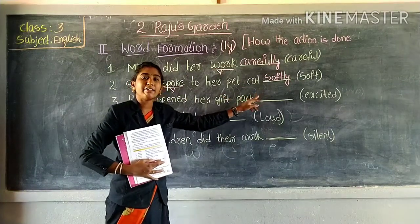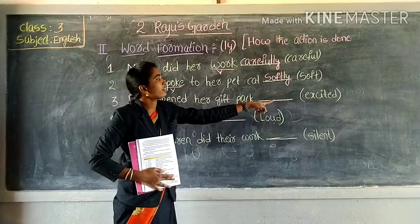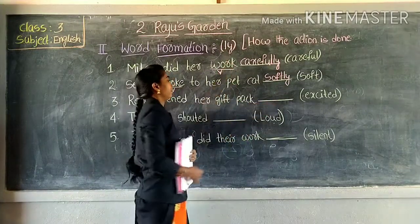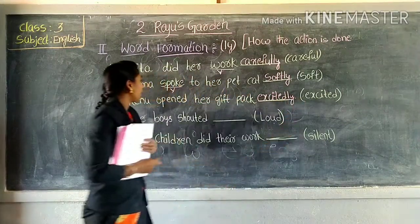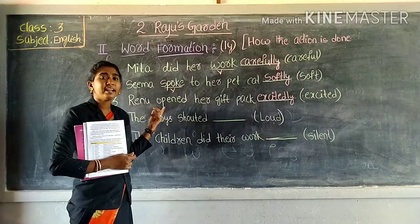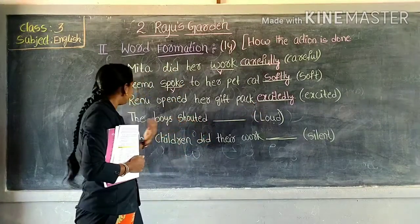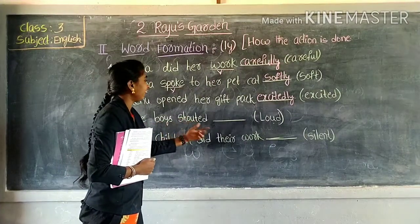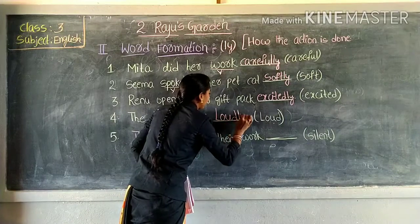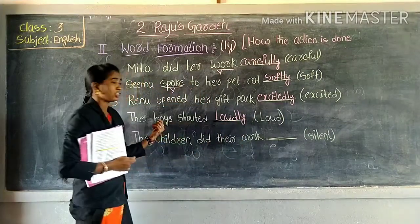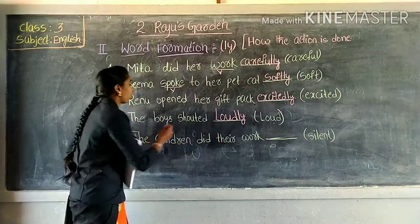How? There is a verb — excited. We have to add L-Y, so it becomes excitedly. How did the window open? They opened it excitedly. This 'excitedly' is the adverb. Adverb says how the action is done. The boys shouted loudly — how did they shout? Loudly. This 'loudly' is the adverb. Here 'shouted' is the verb.